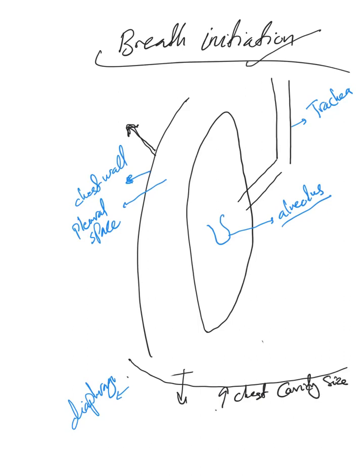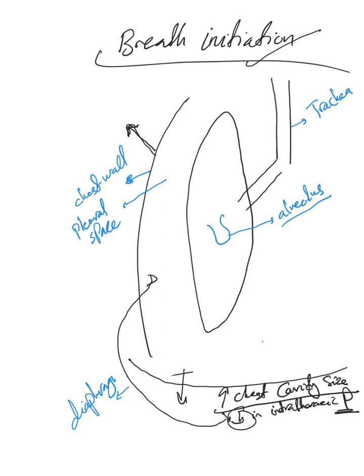This increase in size or volume happens at a constant temperature and constant amount of air. As we just saw with Boyle's Law, this will lead to a decrease — an increase in what we call intrathoracic pressure — specifically a decrease in intrathoracic pressure.